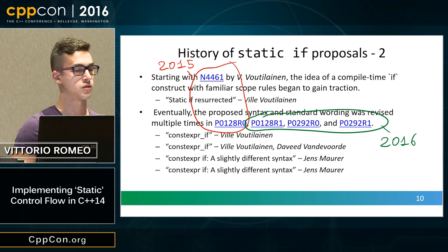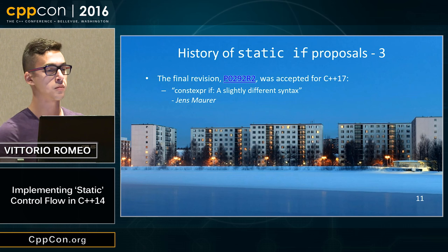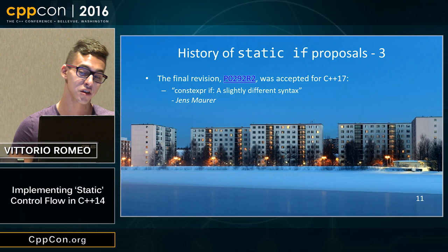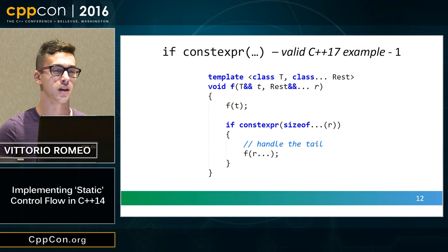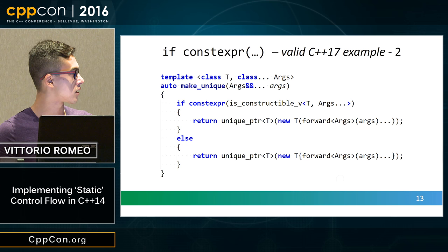In Oulu, we got the final revision, which was accepted for C++17. The same example seen before is valid C++17 — you can write this if you have a C++17-compliant compiler; Clang SVN should handle it quite nicely. This example is not hypothetical; you can write it in C++17.